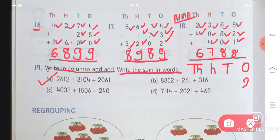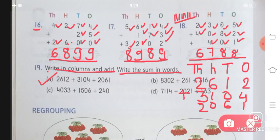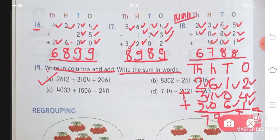Part A: 2612 — writing from the back: 2, 1, 6, 2. Then 3104: 4, 0, 1, 3. And 2061: 1, 6, 0, 2. We have to add all of these. 2 plus 4 plus 1 will give you 7. 1 plus 0 plus 6 will give you 7. And 6 plus 1 will give you 7. 2 plus 3 plus 2 will give you 7.